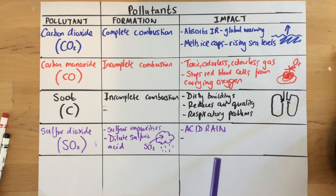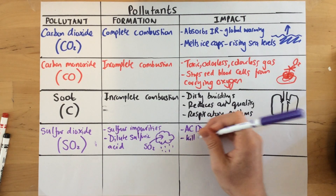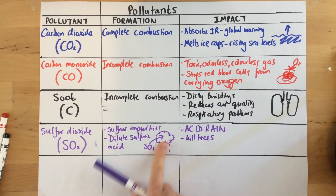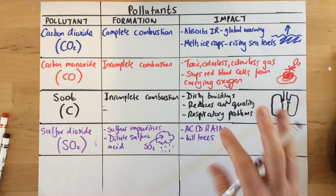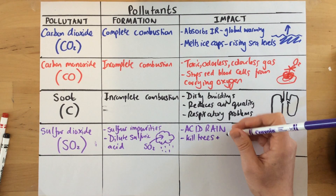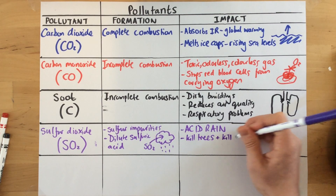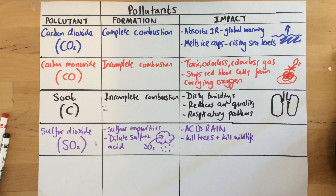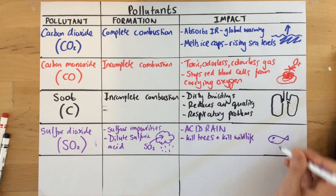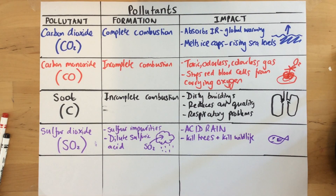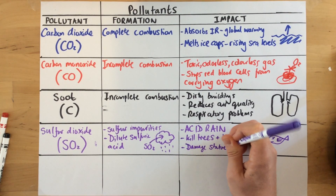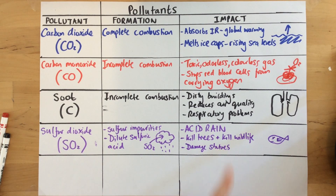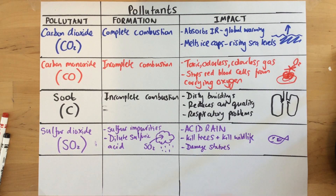The big problems caused by acid rain — dilute sulphuric acid raining down from clouds — are as follows. First, it can kill trees, which are exposed to the acid. If it goes into lakes, it can acidify them and kill wildlife, particularly fish. It can also damage statues, especially those made of limestone, as the acid reacts with the limestone causing corrosion and damaging statues and other buildings.